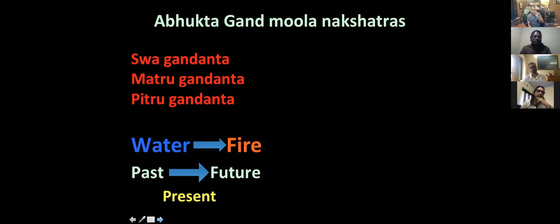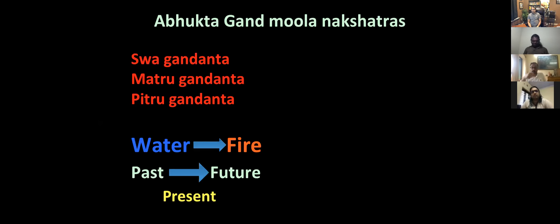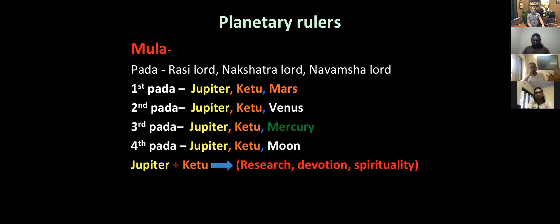In the third pada of Moolah - Jupiter, Ketu, Mercury - I've actually seen a forensic accountant who goes very deep into accounting to nitpick and find problems. Many Moolah people are in auditing - account auditing and investigations, trying to fish out problems from organizations. Jupiter-Ketu-Mercury: Jupiter means knowledge, Mercury means mathematics and analysis, and Ketu together with those makes people excellent with numbers.